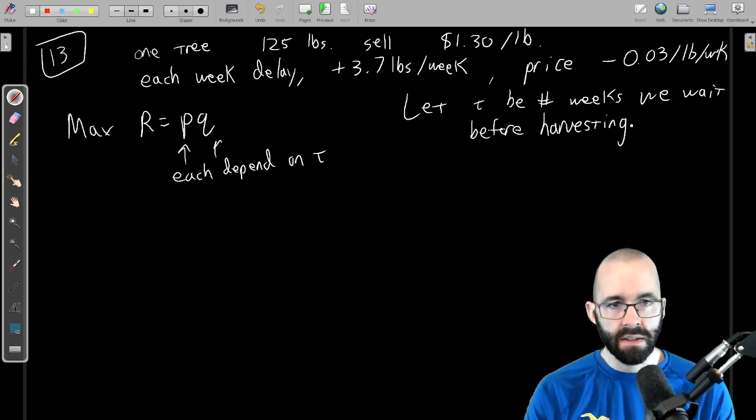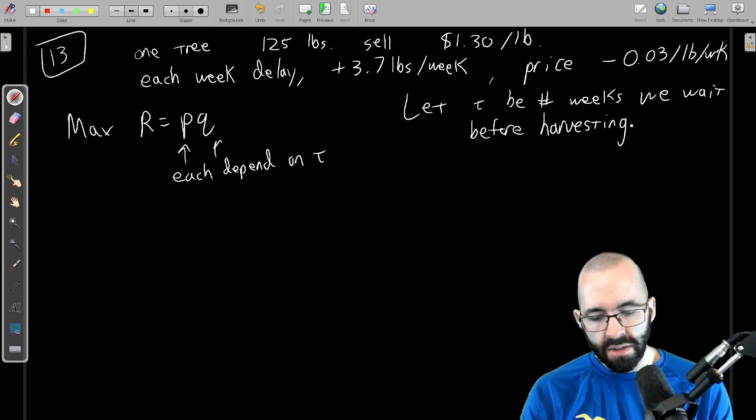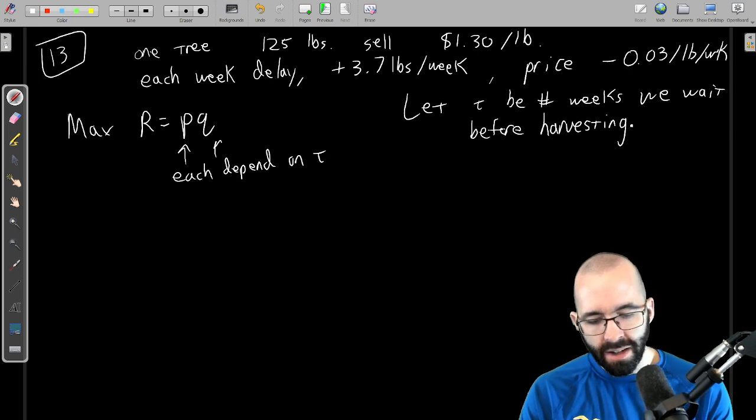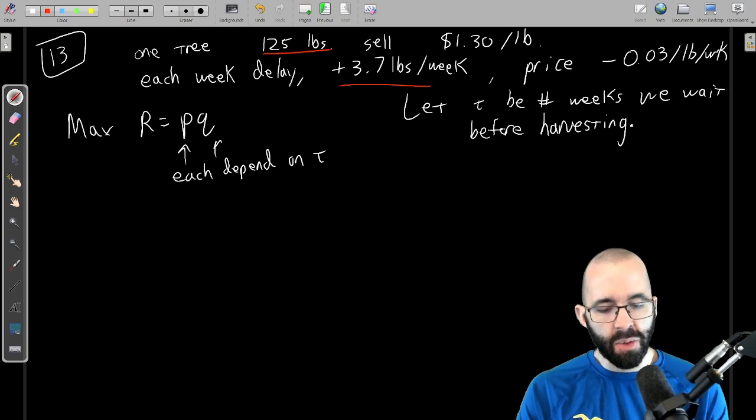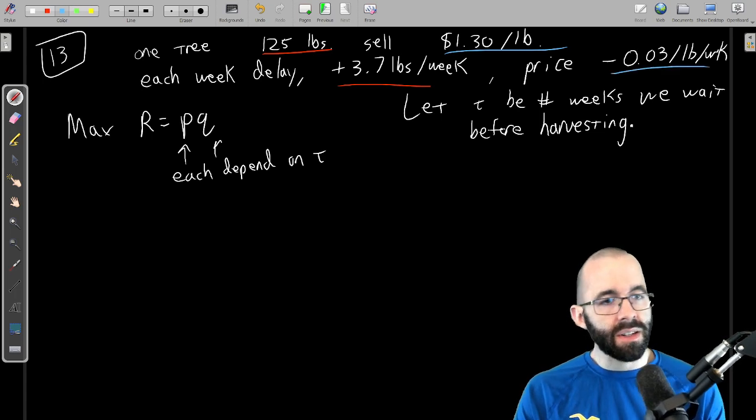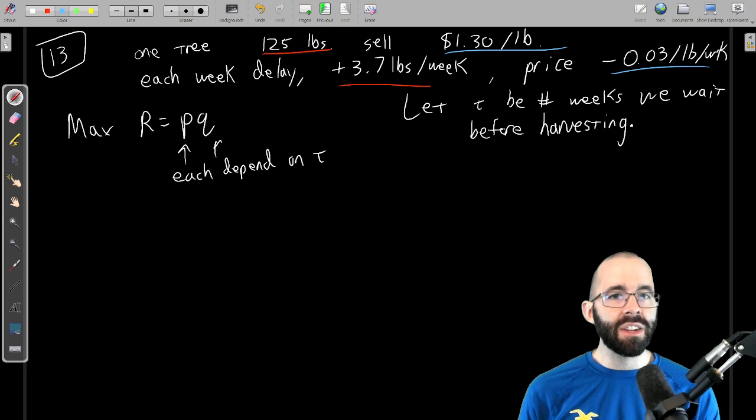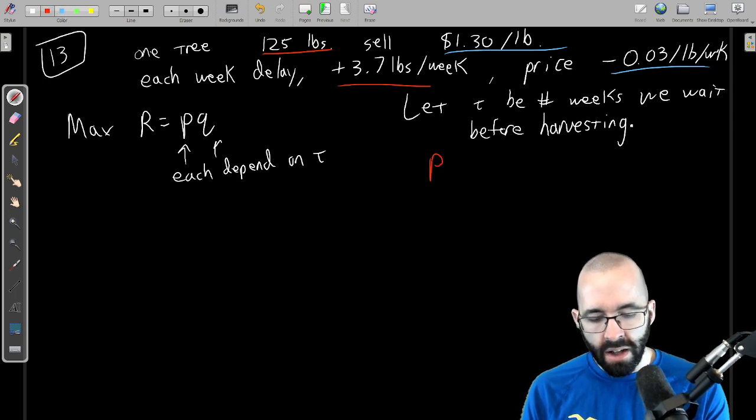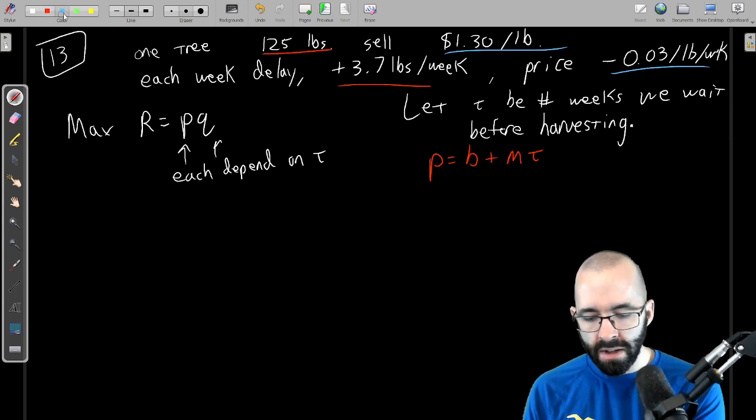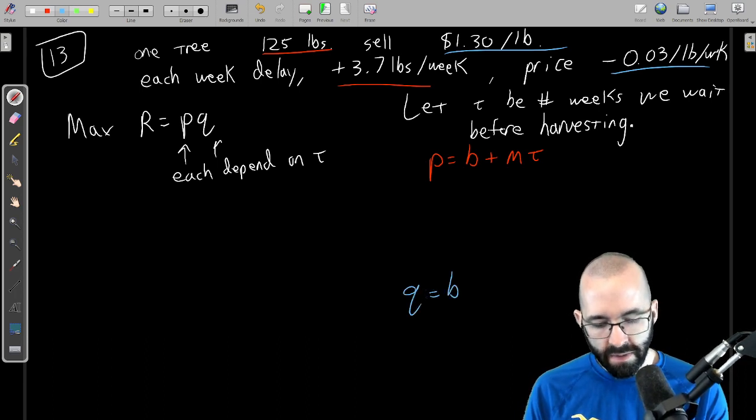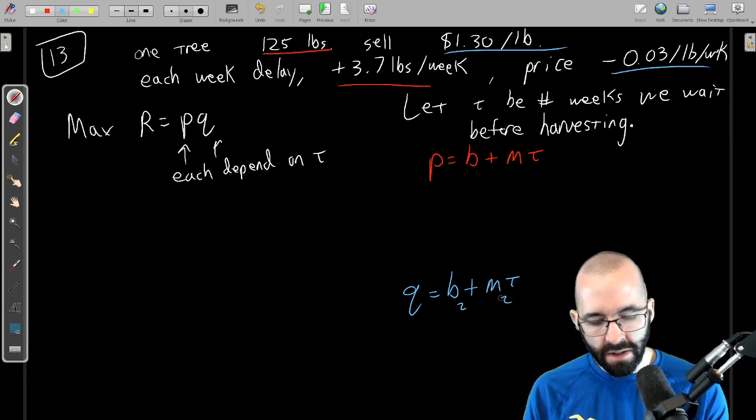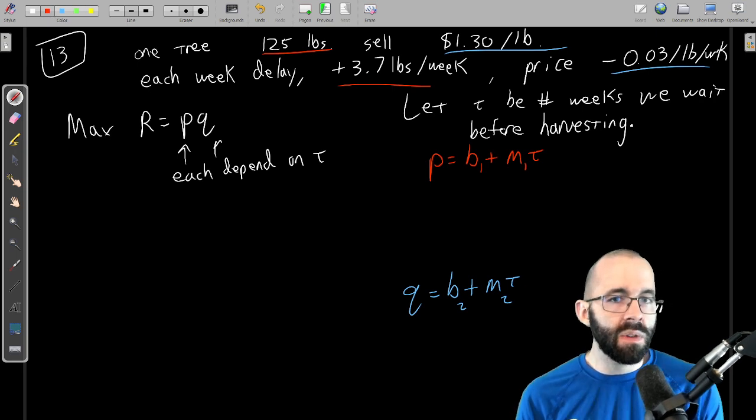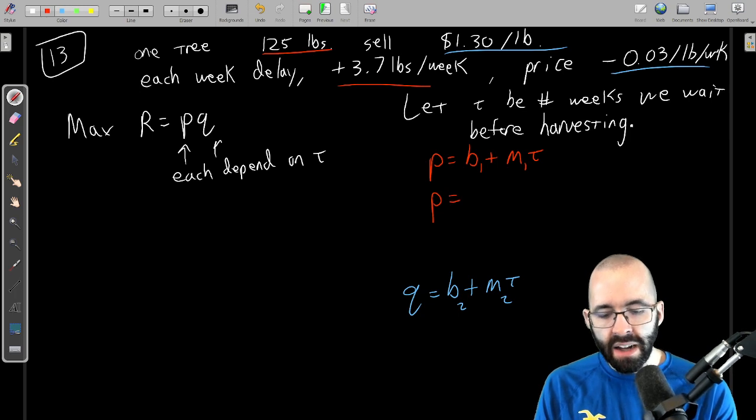Okay, then what does that look like? Well at the start, if we do it as soon as possible, we're gonna have some ordered pairs. This is a linear relationship. For the quantity it starts at 125, it's increasing by 3.7 every week. For the price it starts at $1.30 per pound but it decreases every week. We have linear relationships where input is the time and our output is either the price or the quantity. We'll have two equations here. The price is some linear relationship with time, and the quantity is also some linear relationship with time. Technically these are different slopes and different b values.